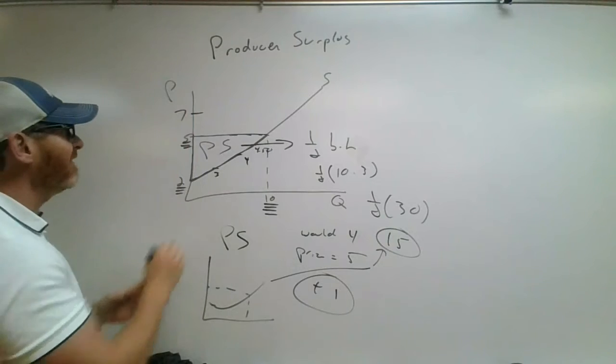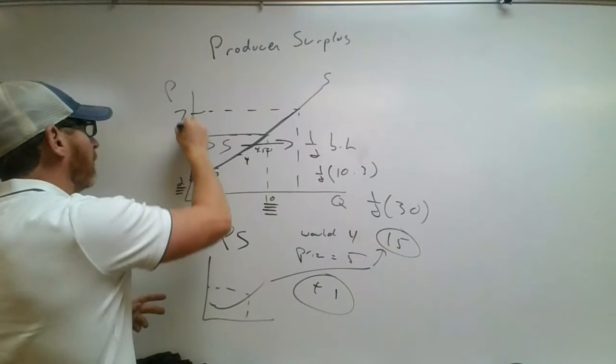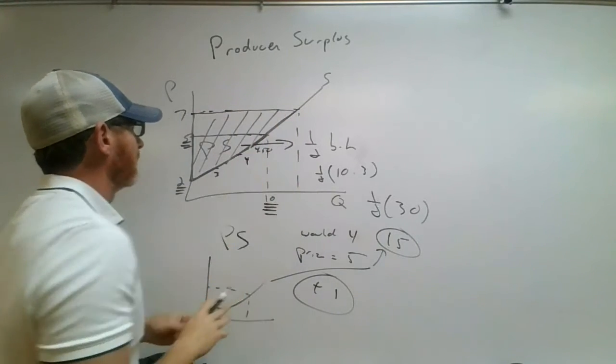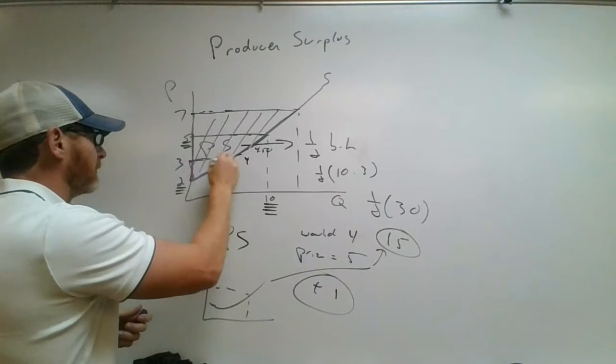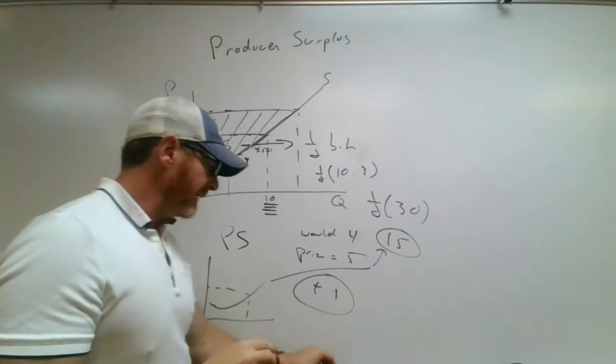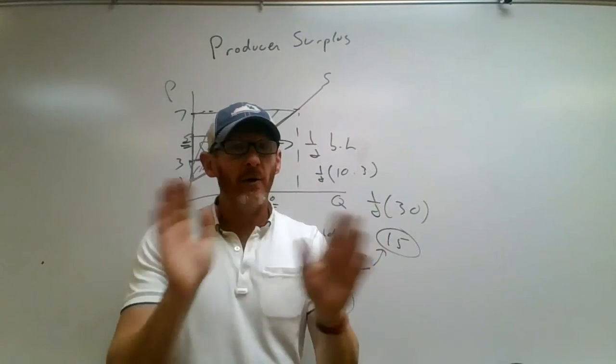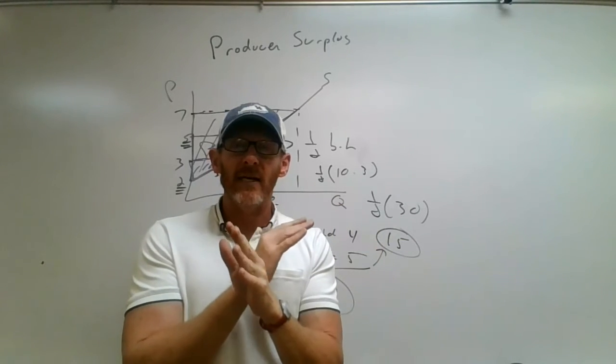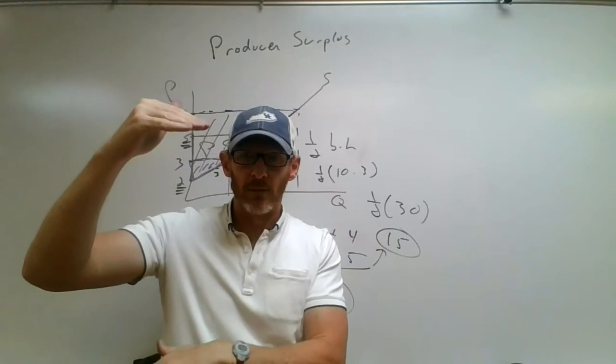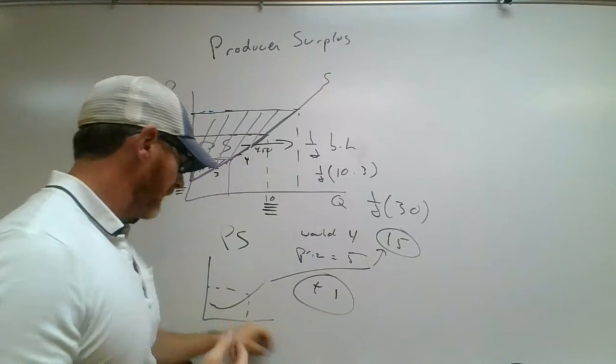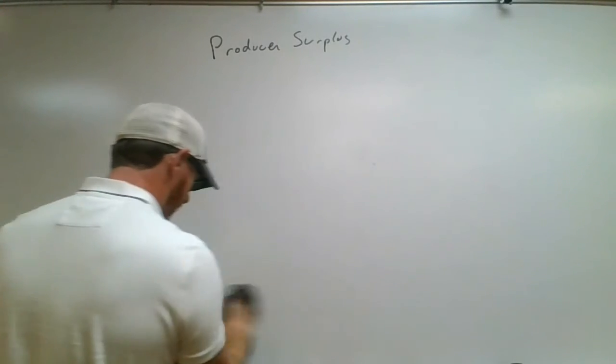So for example, if the price goes up to 7, all of a sudden now, you can see the producer surplus just got way bigger. If the price goes down to let's say $3, now all of a sudden, you can see the producer surplus is way smaller. So when price changes, it changes producer surplus, but it also changes consumer surplus. And so what markets try to do is figure out a way to maximize the welfare.